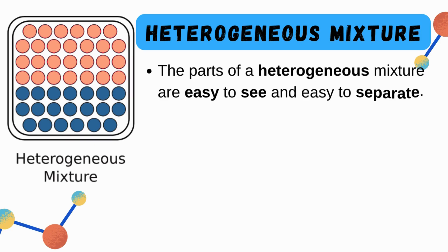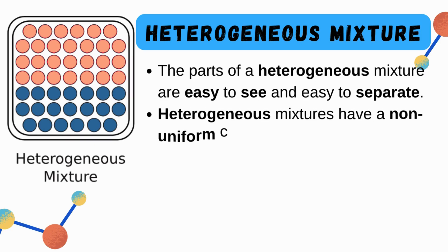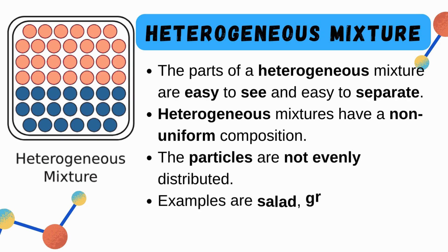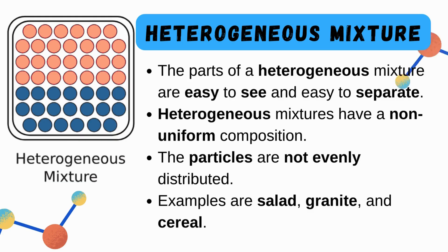Heterogeneous mixtures are easy to see and easy to separate the different parts, so they have a non-uniform composition. The particles are not evenly distributed, meaning each sample you grab would look different and not have an even distribution of particles. Some examples are salad, granite, and cereal.